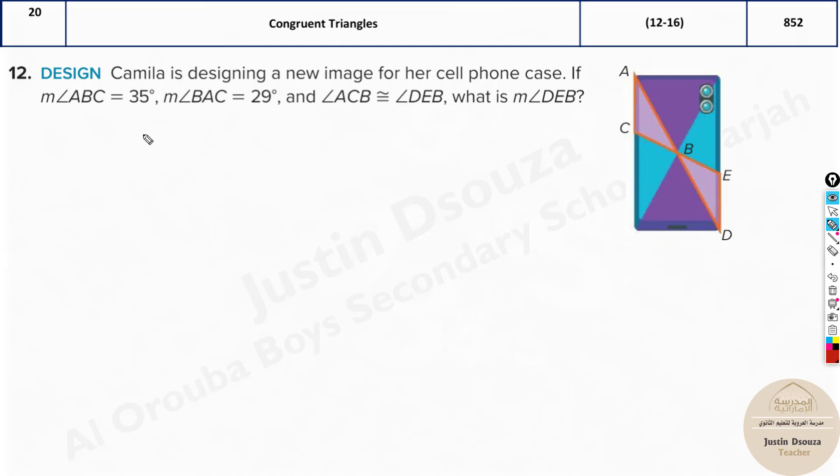If the measure of angle ABC is 35 degrees and angle BAC is 29 degrees, and angle ACB is equal to angle DEB, we need to find angle DEB. Instead of trying with vertical angles, the best way is to find ACB and then tell that ACB value equals DEB.